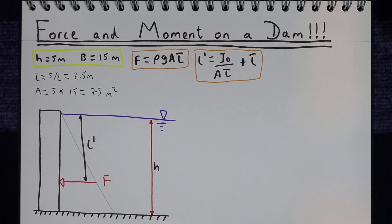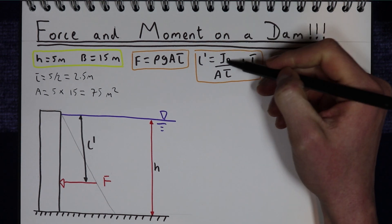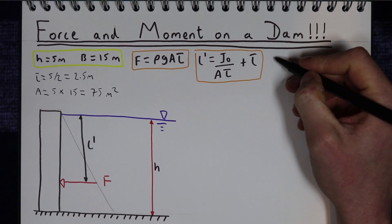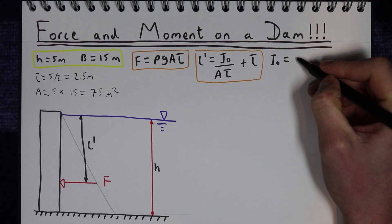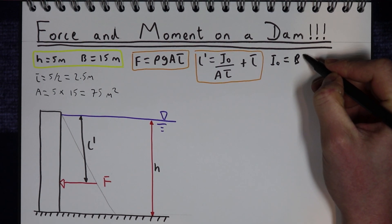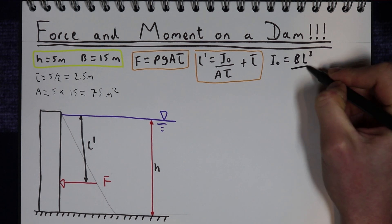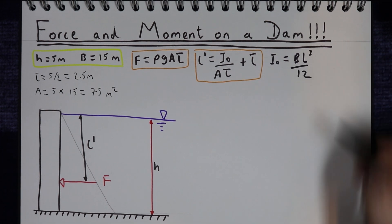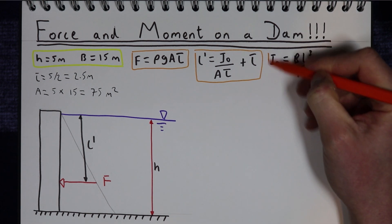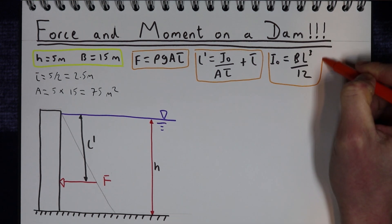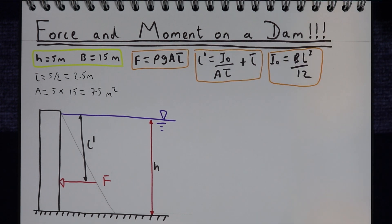The final equation we need is the second moment of area about the centroid of our surface. For a rectangular section, that is the width times the height to the power of 3, divided by 12. We now have all the equations needed to solve this problem.